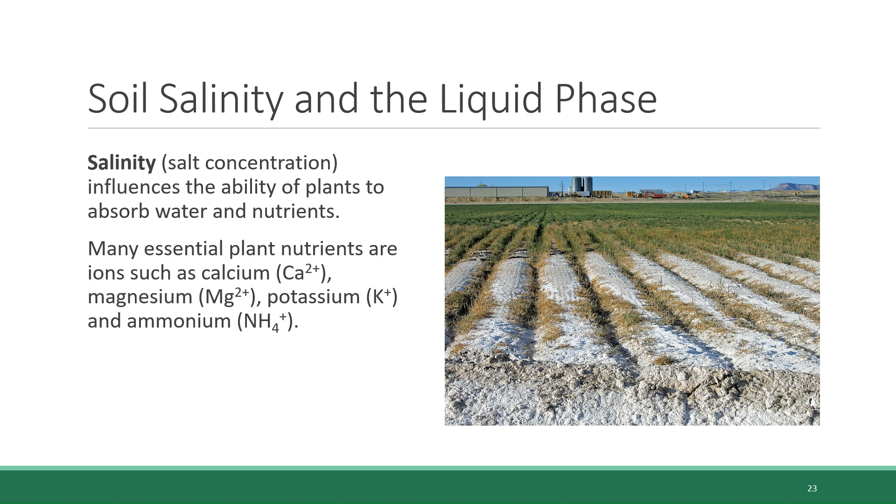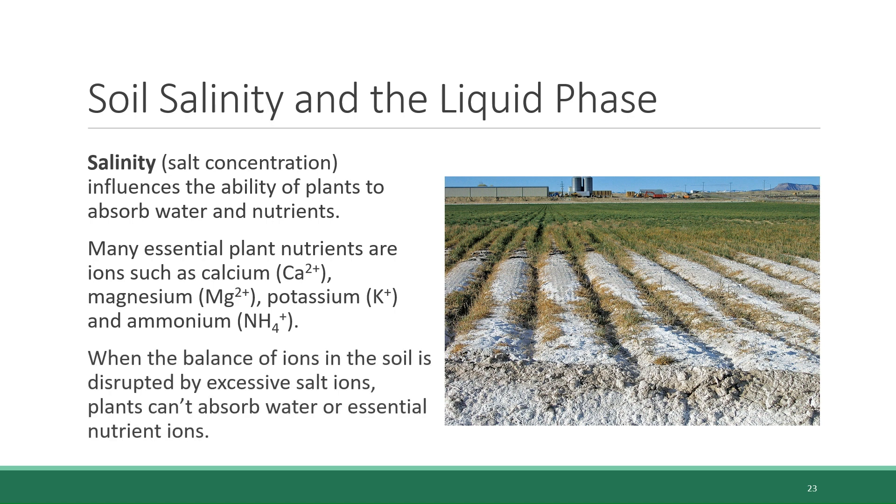Well, the simplified explanation is that many essential nutrients that plants need to survive are ions, including calcium, magnesium, potassium, and ammonium. Remember from chapter 2, ions are particles with an electrical charge. And salts are also made of ions. They are ionic molecules. So when you get really high concentration of salts in a soil, there is such a sheer volume of ions that the balance is thrown out of whack. And the plants can't get access to the essential important ions that they need, nor can they properly absorb water out of the soil.